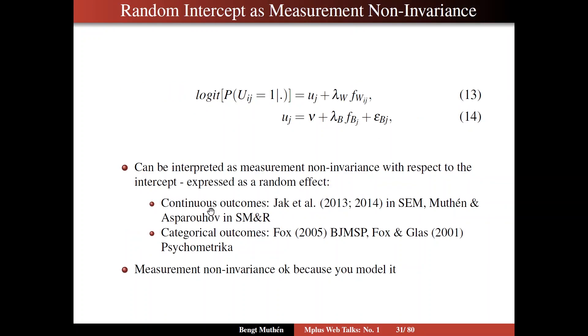If you take this a little bit further on slide 31 and think about it more, what does a random intercept mean? Well, it means that you don't have the same intercept in all of the between-level units. So we can think of that as a measurement non-invariance matter. We have a measurement model here, observed variables u as a function of latent variables, factors on within and between. So we don't have measurement invariance, and we have non-invariance with respect to the intercept.